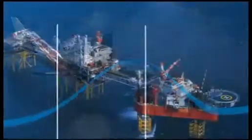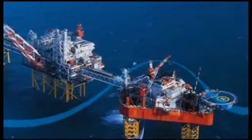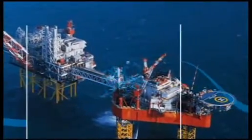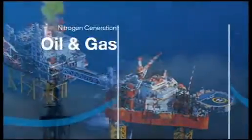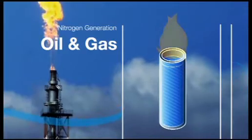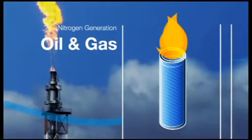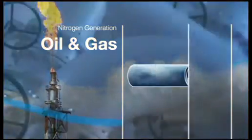This method of blanketing using nitrogen is also used when flaring flammable gases. The nitrogen blanket in the pipe prevents any backflash from the flame.